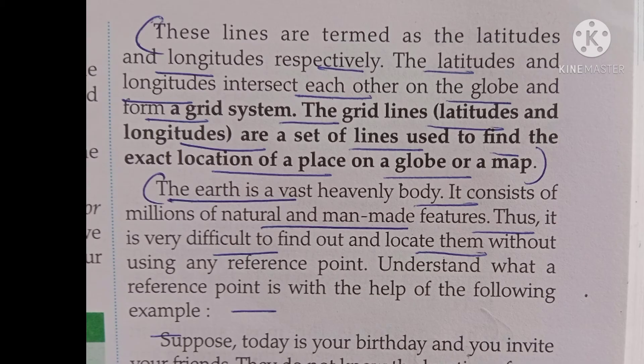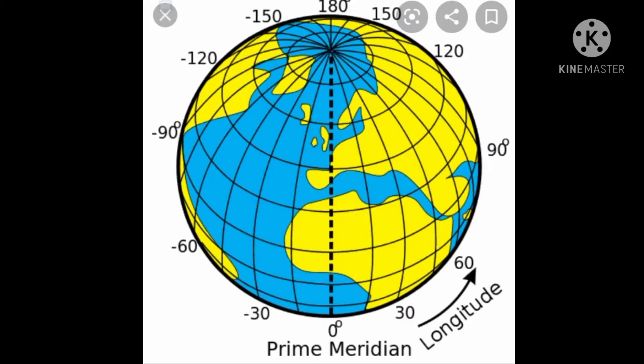The two imaginary lines are latitudes and longitudes. The latitudes and longitudes intersect each other on the globe and form a grid system. The grid lines — latitudes and longitudes — are a set of lines used to find the exact location of a place on a globe or a map.